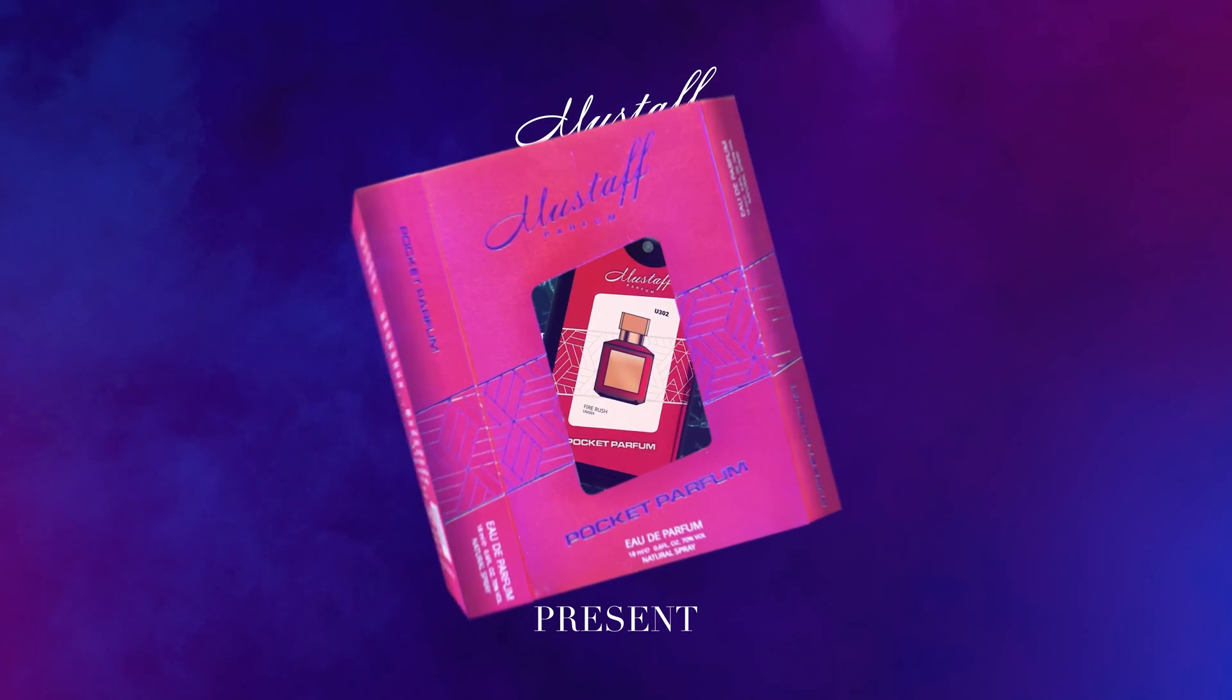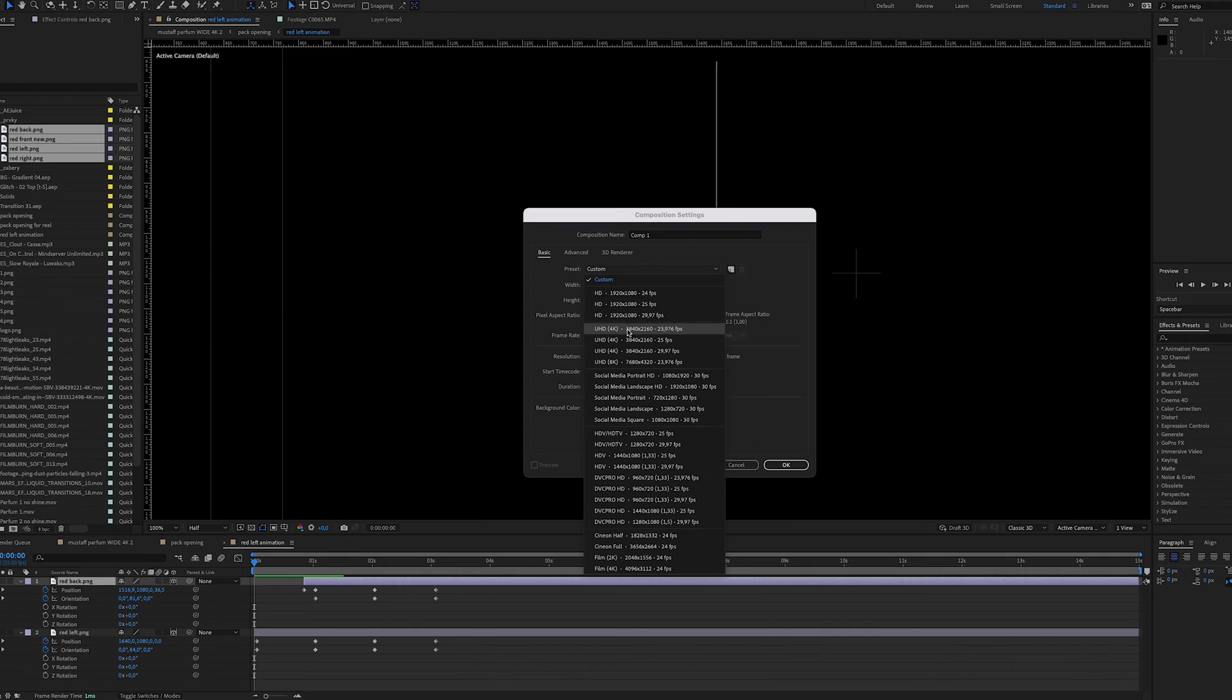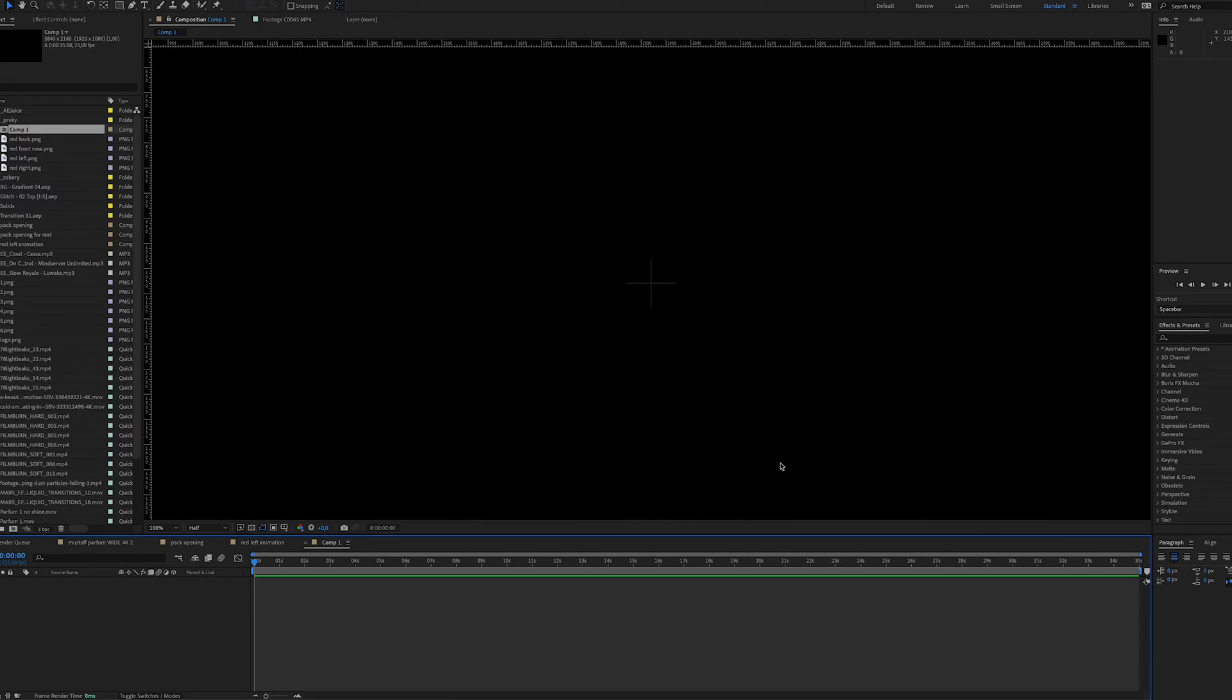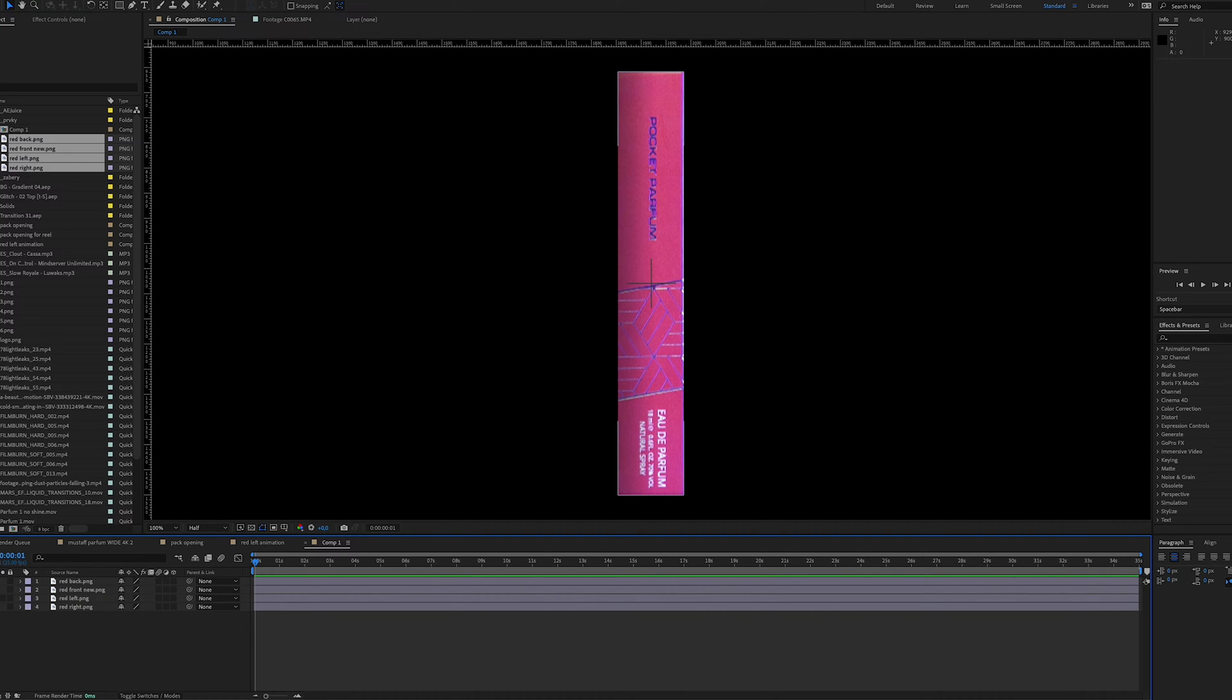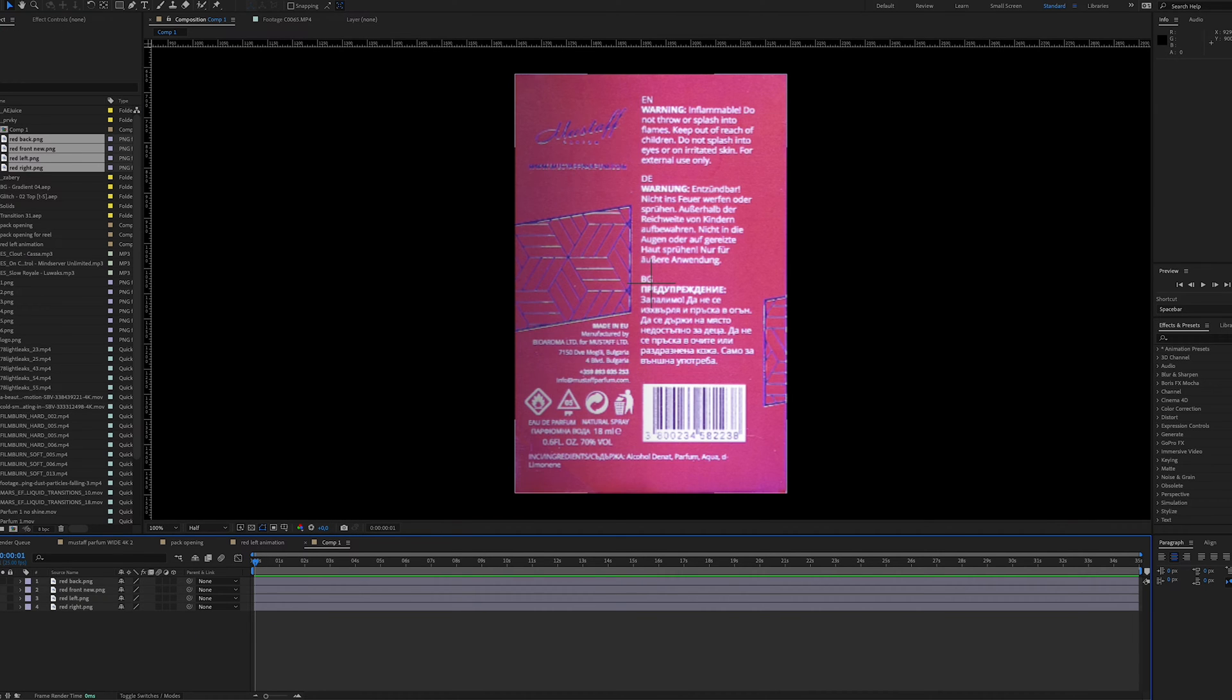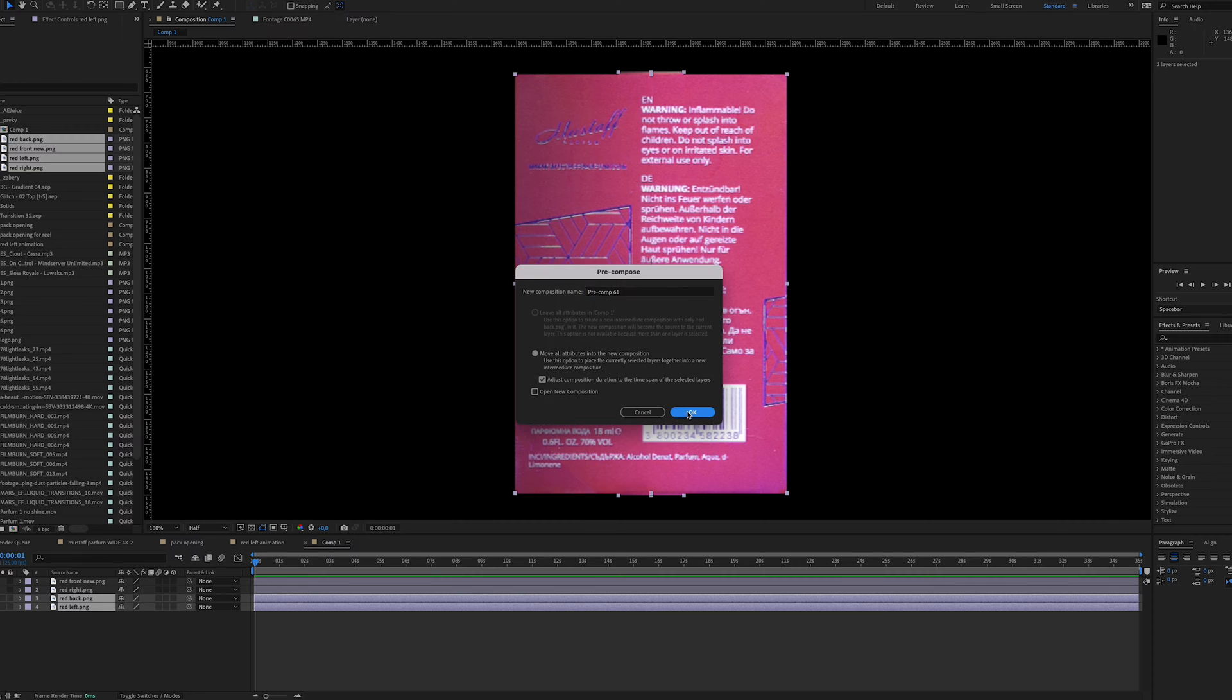So now let me show you how I made the packaging fly off from the perfume. I create a new composition where I import all the PNG images. First I start to animate the left side of the label and the back side of the label. So I select both the images and create a new composition. Later you will see why I create a new composition from those two images.